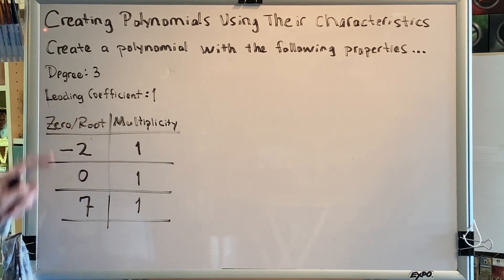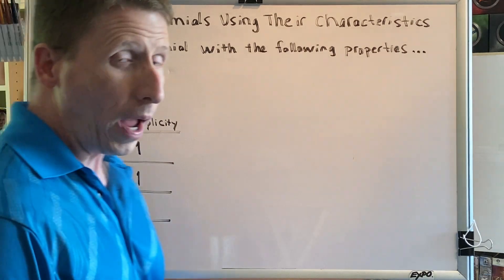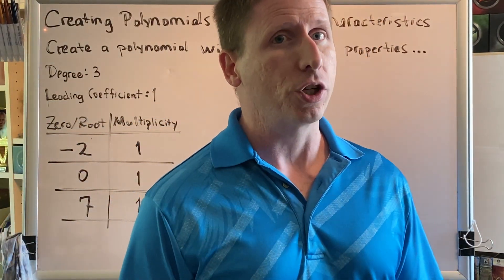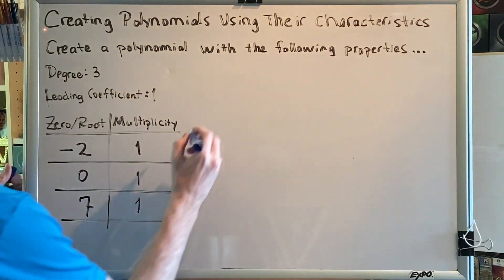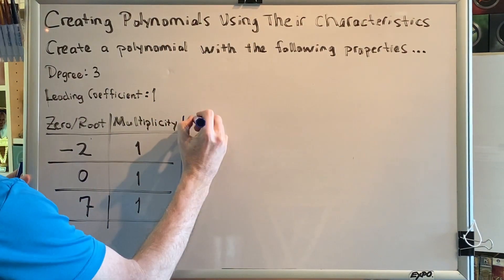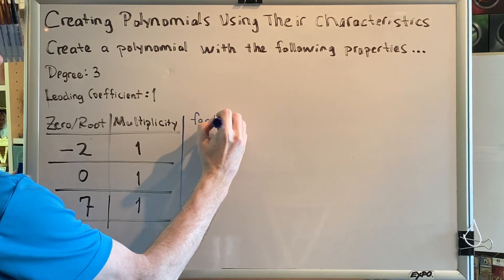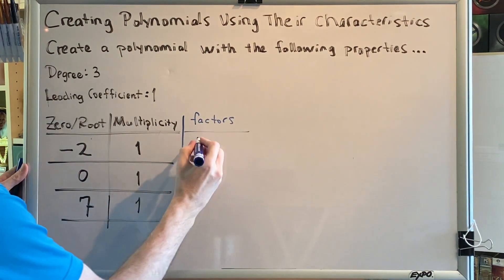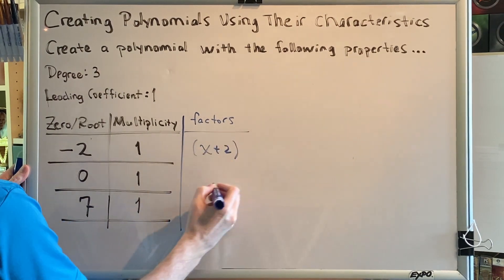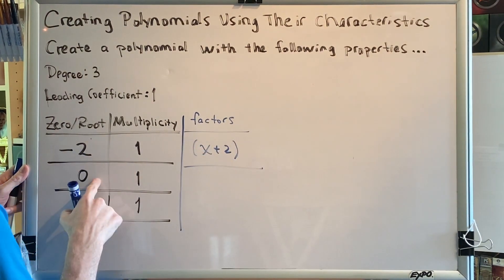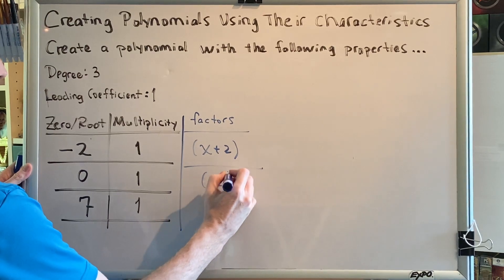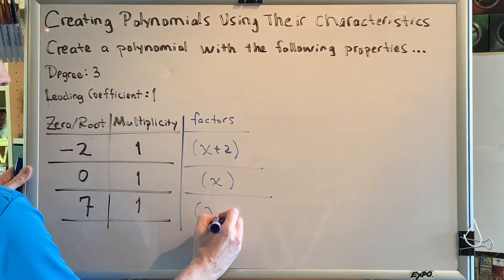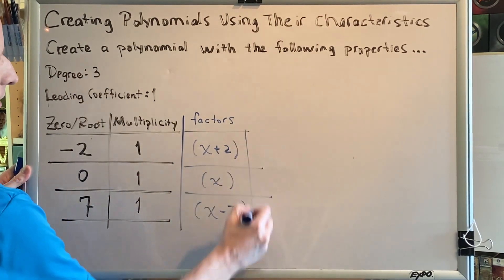We remind ourselves that another word for root is zero. To begin creating our polynomial, we need to remember the factors that go with each of our roots — a skill from a previous video. Let's make another column for factors. If your root is negative 2, the factor that produced that root must be x plus 2. If your root is 0, the factor must be x. If your root is 7, the factor must be x minus 7.